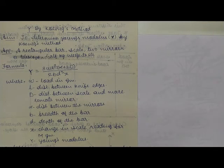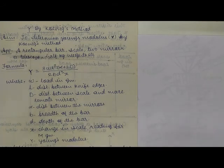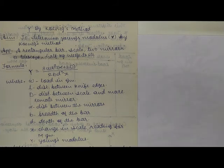You might have seen different methods to find Young's modulus in your 12th standard or in first or second year. This is another method to find Young's modulus. It was developed by the scientist Koenig, and that is why it is called Koenig's method.